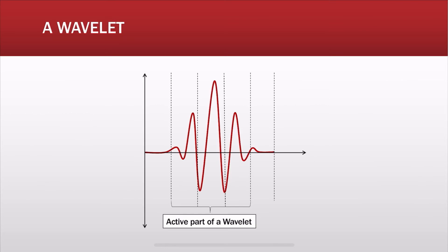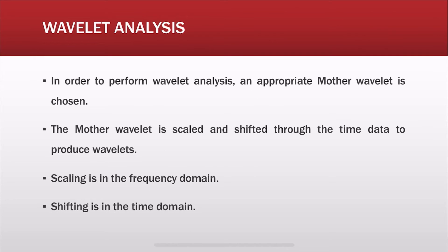Wavelets have different shapes and sizes. This is how a typical wavelet looks — it starts at zero, ends at zero, and oscillates in between. In order to perform a wavelet analysis, an appropriate mother wavelet is chosen. The mother wavelet is scaled and shifted through the time data to produce wavelets. The mother wavelet is the main wavelet, which is then scaled and shifted to produce children wavelets.